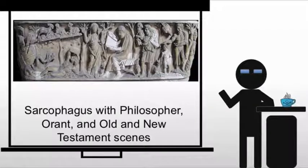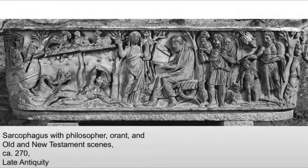We return again to funerary arts, looking at the sarcophagus with philosopher Orant and Old and New Testament scenes. Wealthy patrons — pagans, Jews, and Christians alike — need sarcophagi, and these are almost always going to be marble. The imagery on the coffin is like that in the painting of the catacombs.